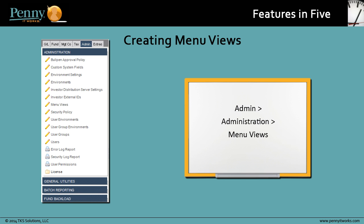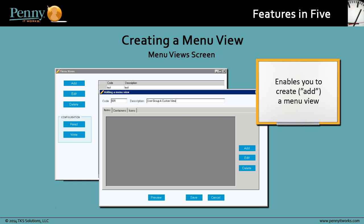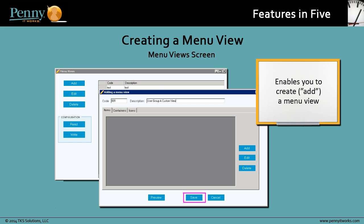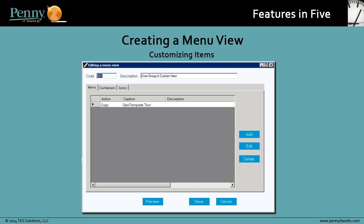You access the Menu Views feature from the Admin menu. The Menu Views screen enables you to create, or add, a menu view. You enter a code and description, and then save it. The menu view is then available in Penny. You can now edit the menu view with custom features. First, let's look at customizing items.